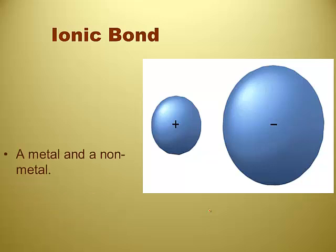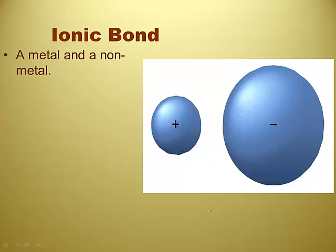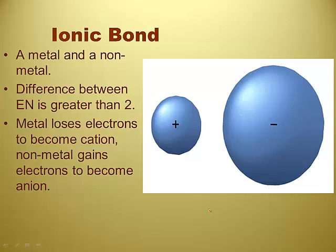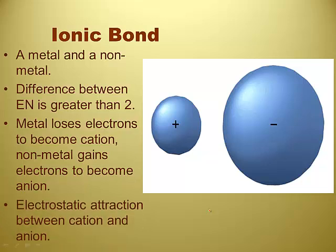So ionic: difference in electronegativity greater than 2.0. Usually it's a metal and a nonmetal, although not always. Most of the time you're going to be able to recognize it based on where it is on the periodic table. The metal loses electrons to become a cation, the nonmetal gains. The bond is formed by an electrostatic attraction between the cation and the anion — opposites attract. And it's a very strong bond — matter of fact, this is the strongest kind of bond we've got in chemistry.